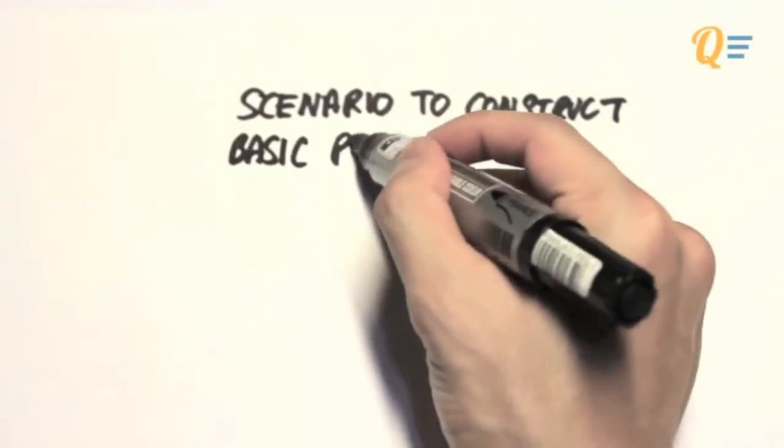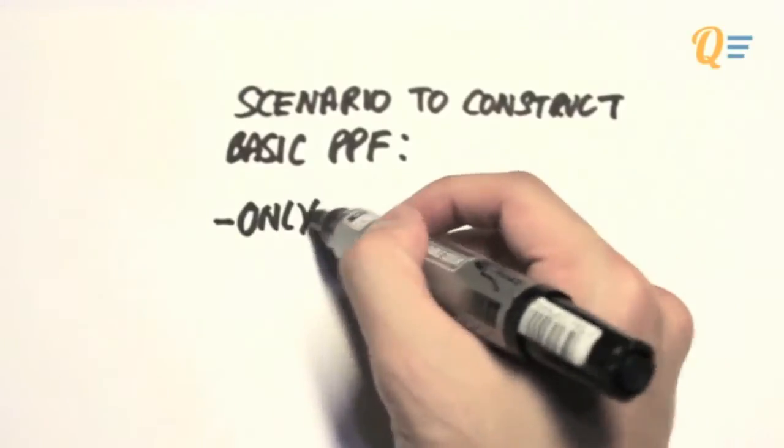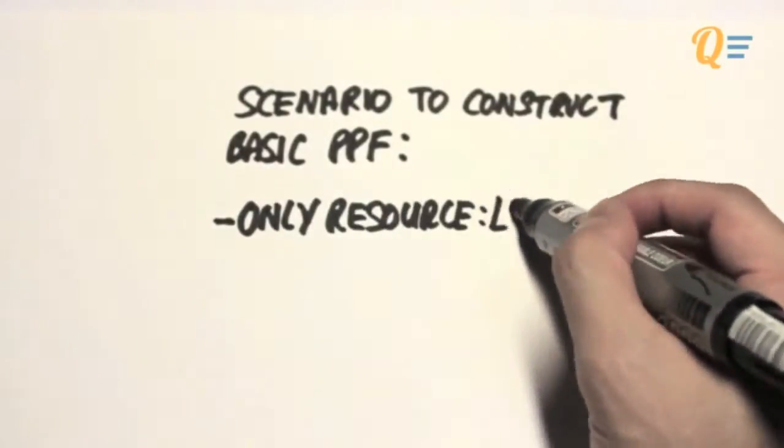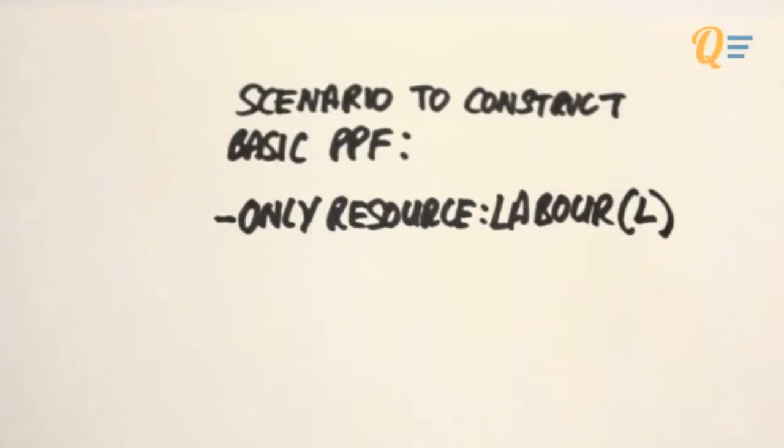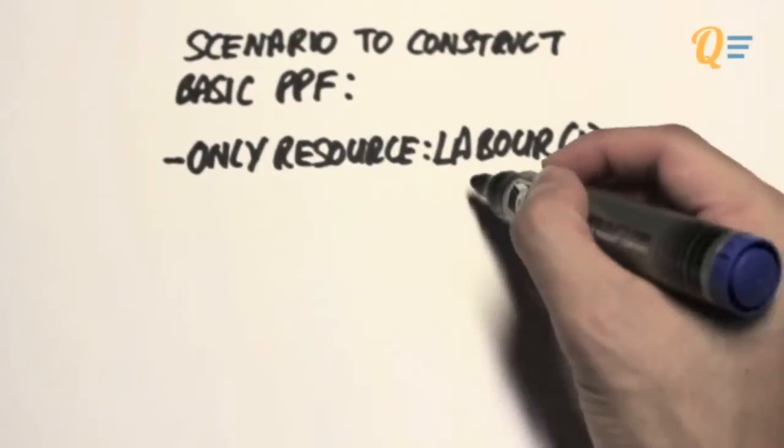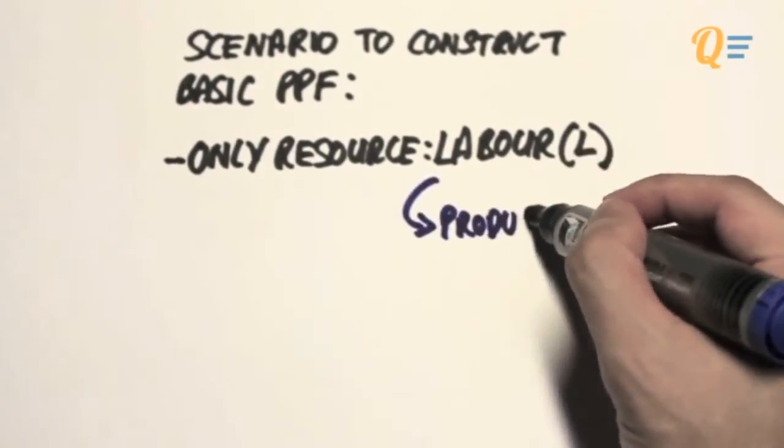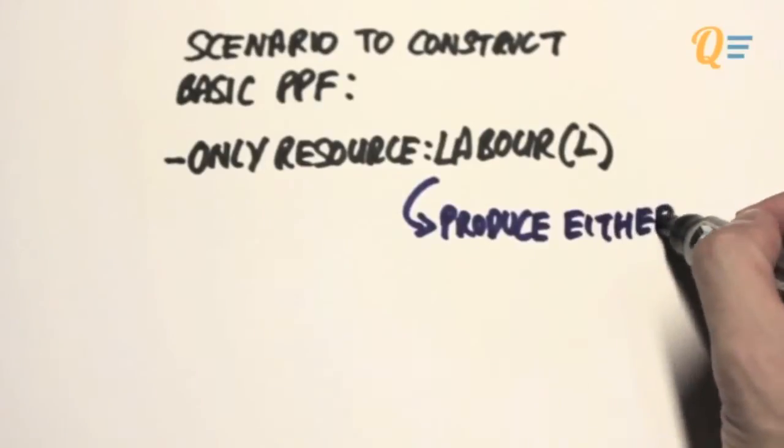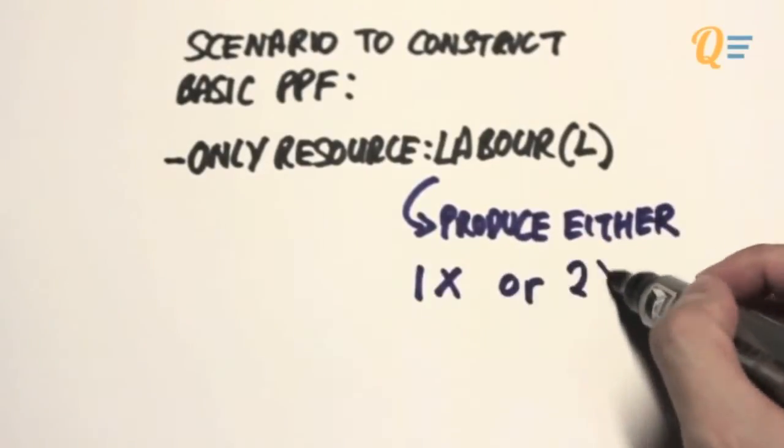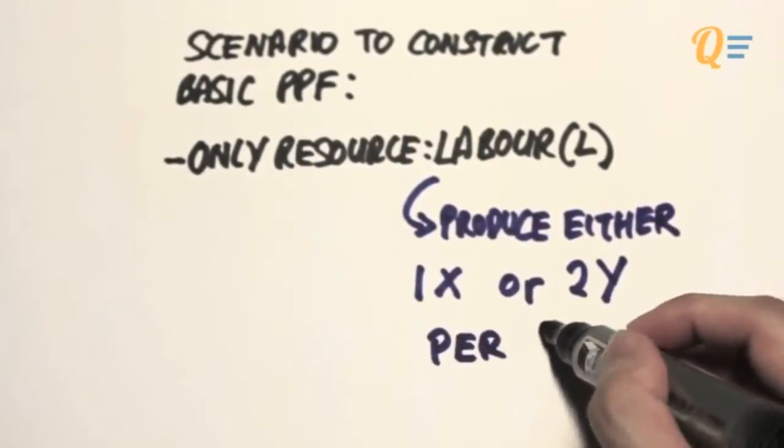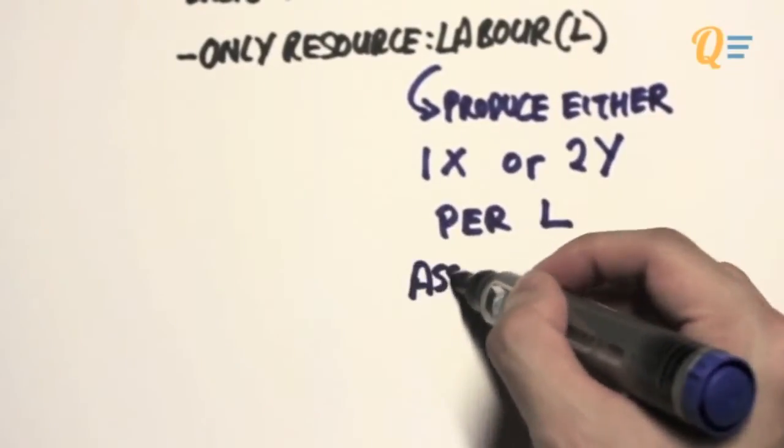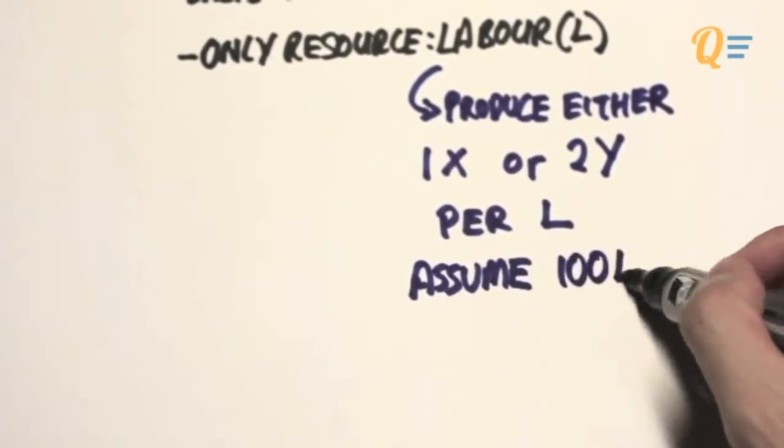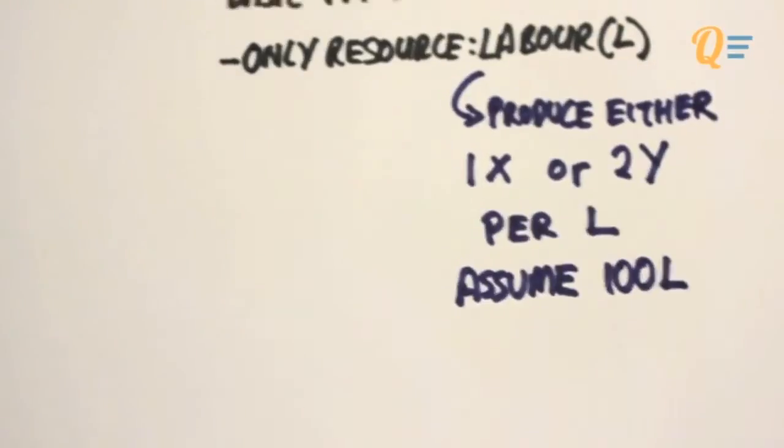The scenario is basically this: there is only one type of resource in this particular economy, and that will be labor, which is shorthand called L. One unit of labor can produce either 1X or 2Y. Let's assume that in total, there are 100 units of labor.